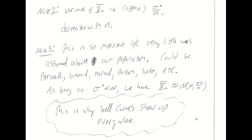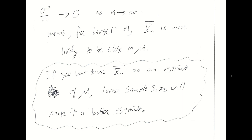Bell curves show up everywhere because there is essentially no limitation in the central limit theorem on what type of population you begin with. As long as the variance is finite, your sample mean is approximately normal. The variance associated with your sample mean goes to zero as n goes to infinity, meaning for larger values of n, your sample mean is more likely to show up close to your population mean. You do not expect the sample mean to vary much from the population mean for large sample size.